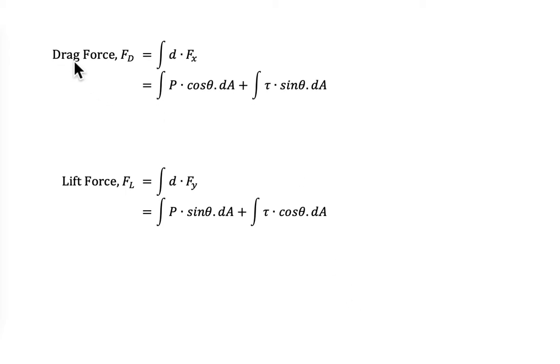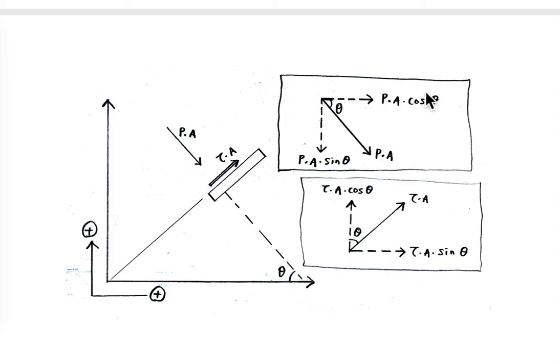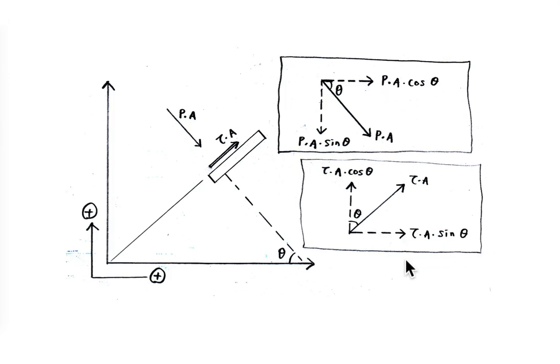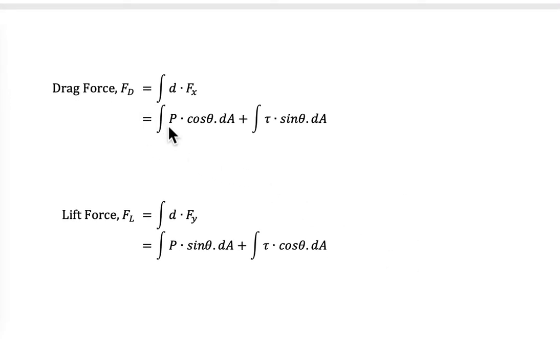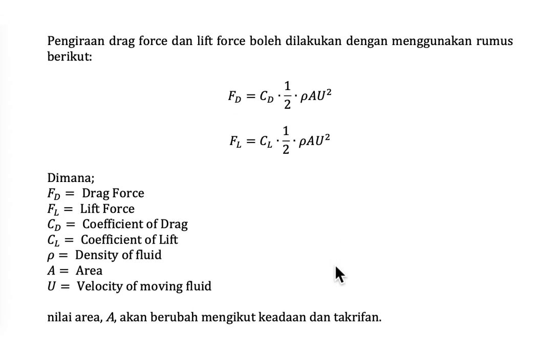Then we could conclude that drag force, normally written as FD, is the compilation or the sum of forces that act on the X axis. From the diagram, we could say that for the X axis, it is PA cos theta and tau A sin theta. So drag force is the summation of P cos theta dA plus tau sin theta dA. While lift force is the summation of forces that act on the Y axis and it can be written like this.